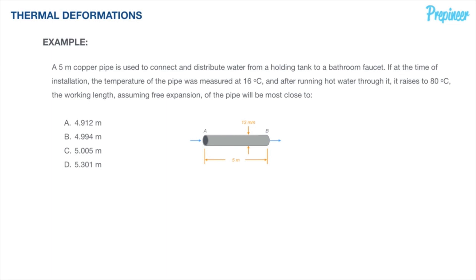If at the time of installation the temperature of the pipe was measured at 16 degrees Celsius and after running hot water through it it raises to 80 degrees Celsius, the working length assuming free expansion of the pipe will be most close to what?